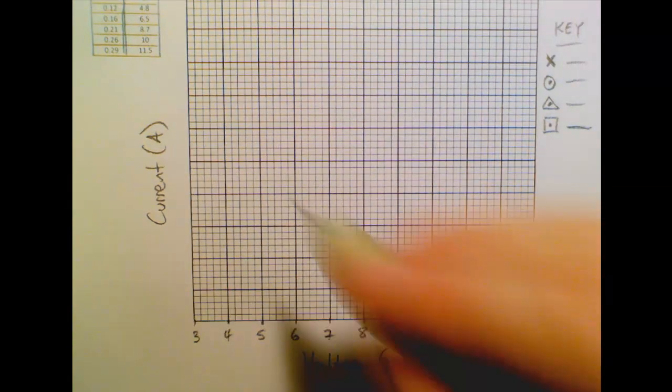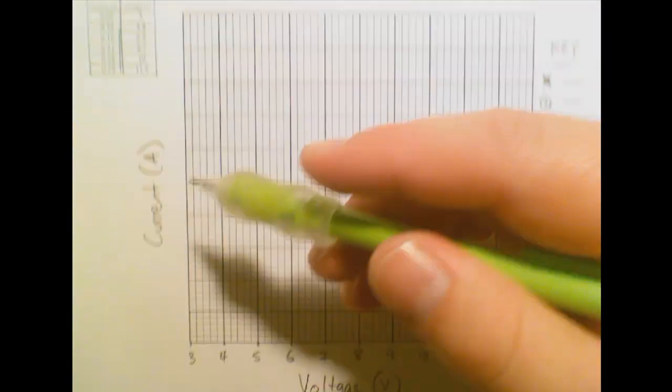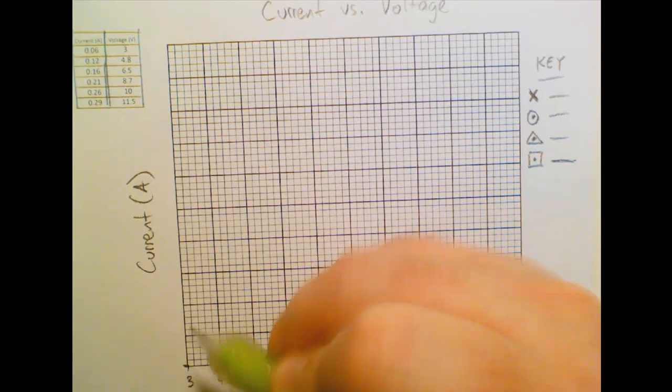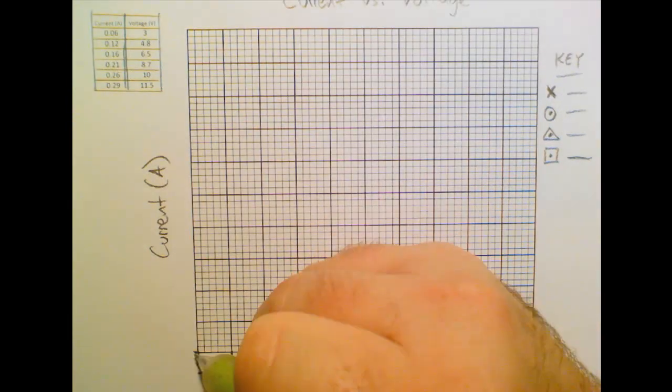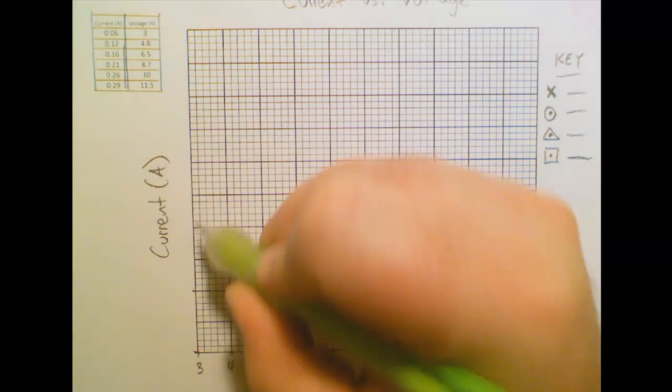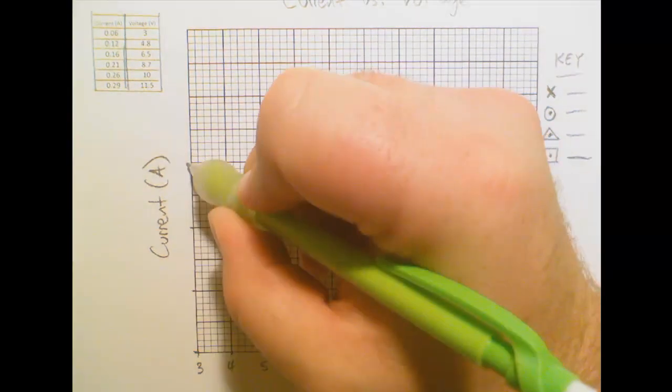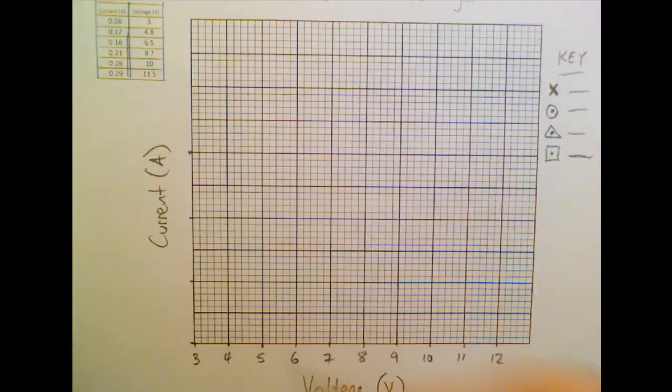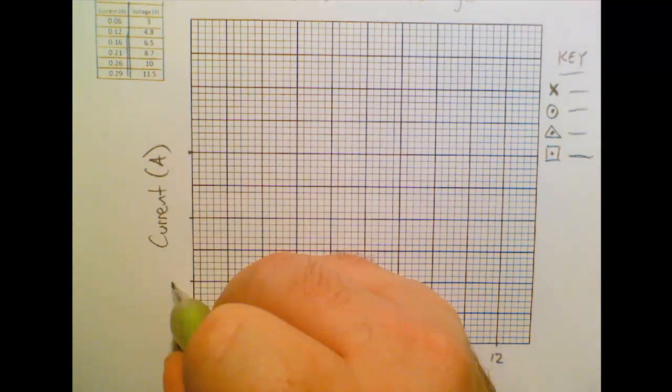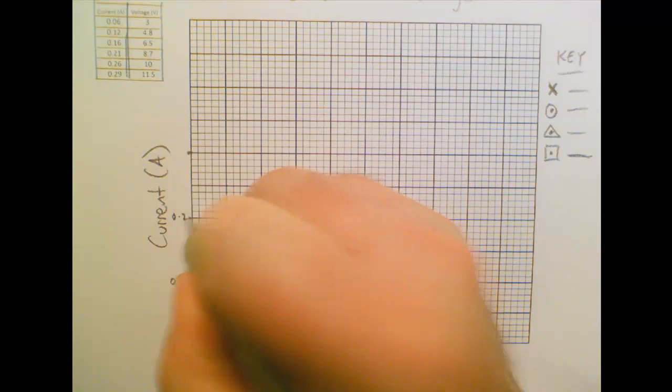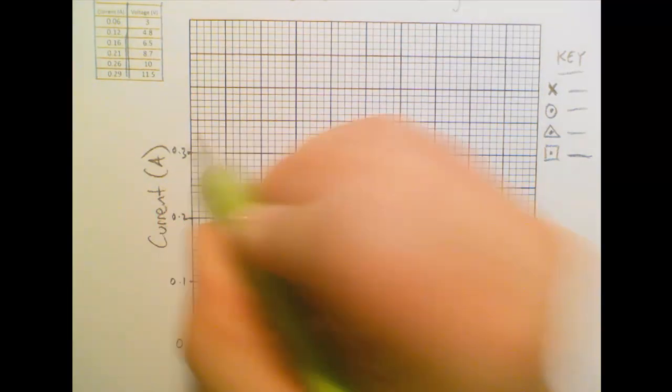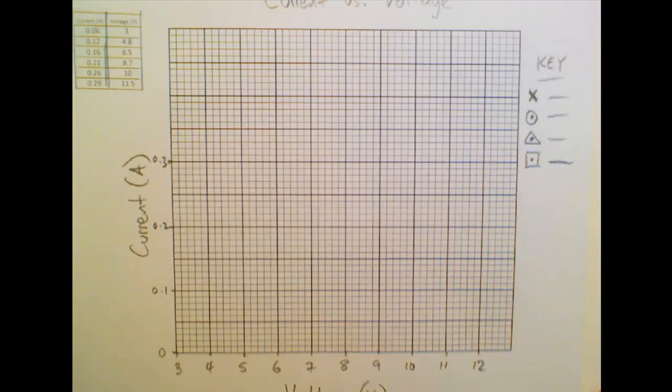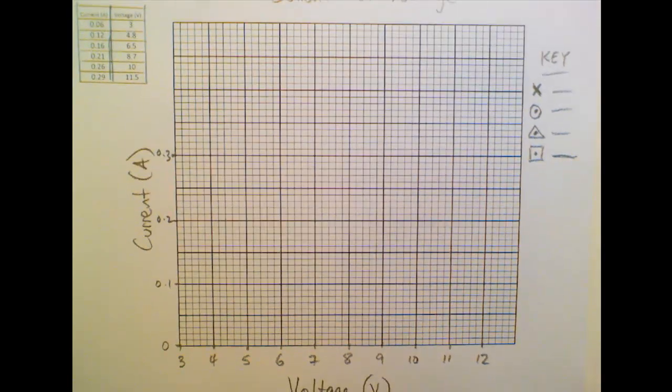And on the other axis, I'm going to have to go from 0.06, so pretty close to 0, to 0.29. So maybe I'll start at 0, and it'll be 0.1, 0.2, 0.3. That's probably the best I can do with the amount of graph paper that I've given myself. And that scale there might be reasonably convenient to plot my points. So let's get started.